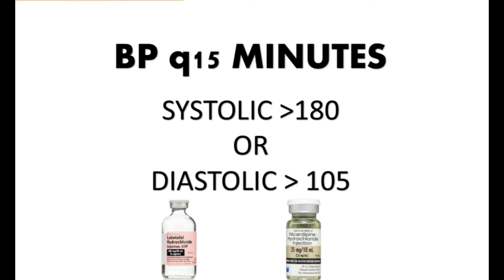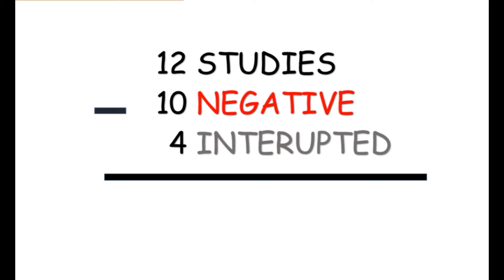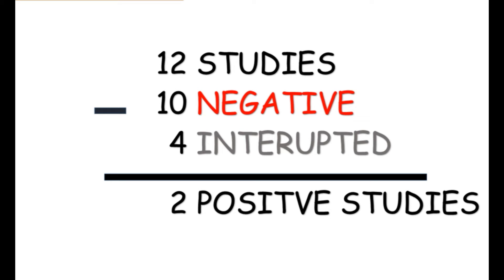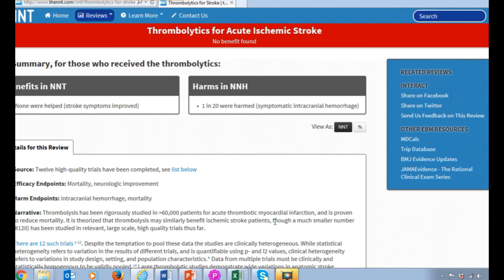TPA is not without its risks. There were 12 studies done while this was being approved by the FDA — 10 came back negative, showing absolutely no beneficial outcome. Four of those 10 were actually stopped early because they were causing harm to patients. That leaves two positive studies. I encourage you to look at the NNT website — NNT.com — where if you type in thrombolytics for acute ischemic stroke, it shows no benefit found. The number needed to harm was 1 in 20, with the most common finding being symptomatic intracranial hemorrhage.